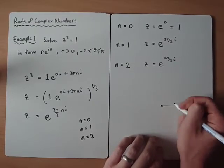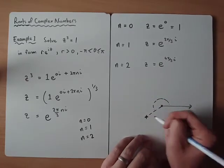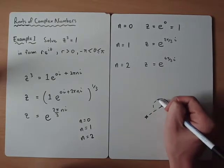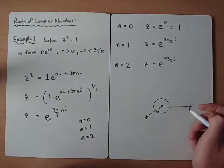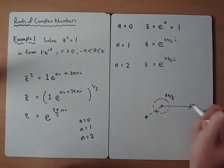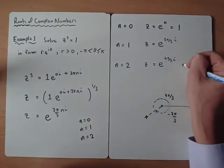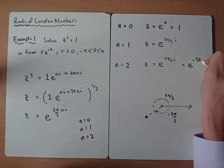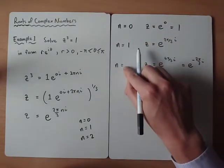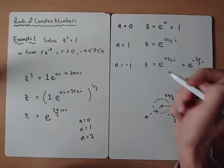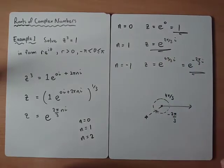4π over 3 is around about here, isn't it? It's like 1π plus 1 third of π. So 4π over 3 would be equivalent to minus 2π over 3. And to avoid that problem, instead of subbing in 0, 1 and 2, we could have just subbed in 0, 1 and minus 1. And that would have given us our 3 roots straight away.